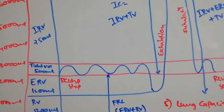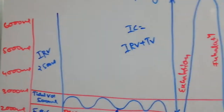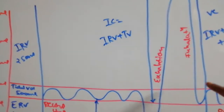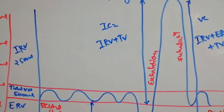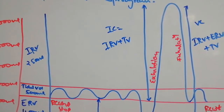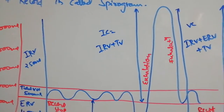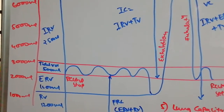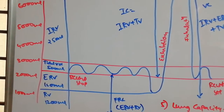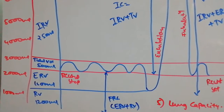The next volume is Inspiration Reserve Volume (IRV). This is the additional volume a person can forcefully inhale beyond normal breath. Normal tidal breath is 500 ml, but forceful inhalation can take in 2,500 to 3,000 ml. Similarly, there is Expiration Reserve Volume (ERV) for forceful exhalation.